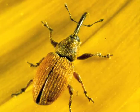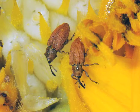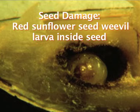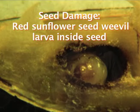Red sunflower seed weevil is about an eighth of an inch long and reddish brown in color. The larvae consume about a third of the kernel, which reduces the seed weight and oil content of the sunflower.